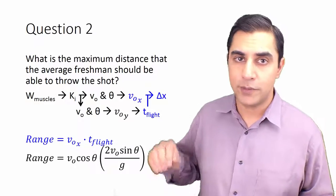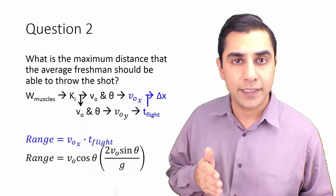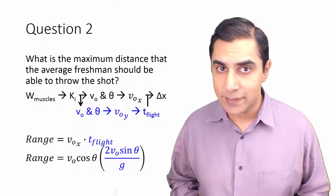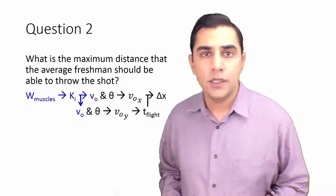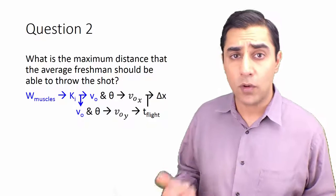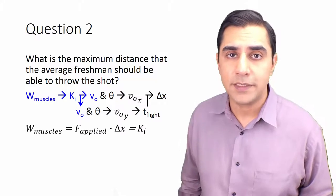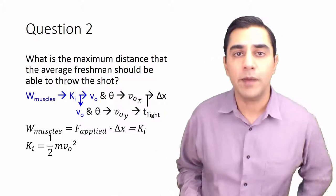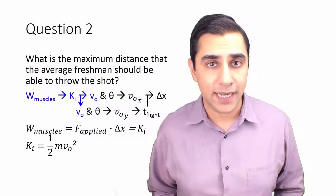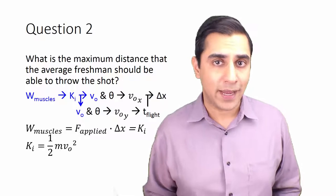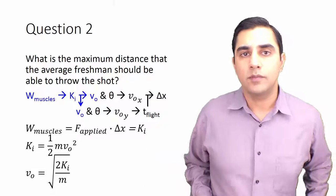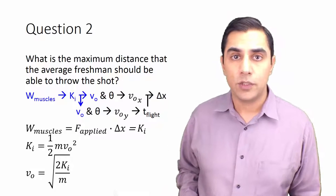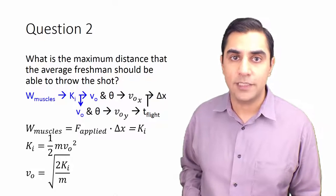To do this from top down: to get range, we need horizontal velocity times time of flight. We can get horizontal velocity using trig, and time of flight by applying kinematics to the vertical axis. The work done by the muscles equals force applied times the displacement of the wrist during the motion. That work equals the initial kinetic energy of the object, which equals one-half times mass times initial speed squared. Rearranging to solve for initial speed: it's the square root of two times the initial kinetic energy divided by mass.